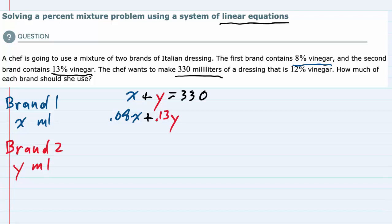So 8% of x is vinegar, and 13% of y is vinegar. When we put those together, we get a mixture that is 12% vinegar, and we're making 330 milliliters of it. So 0.08x + 0.13y = 0.12(330).